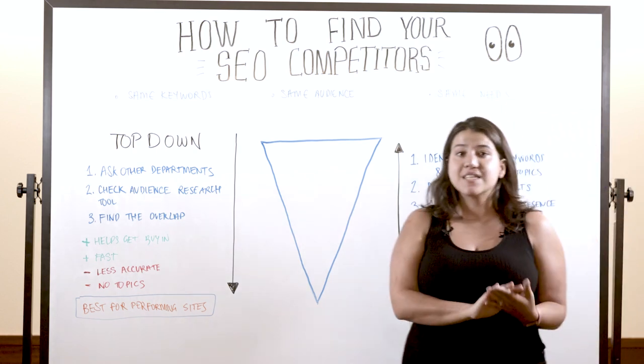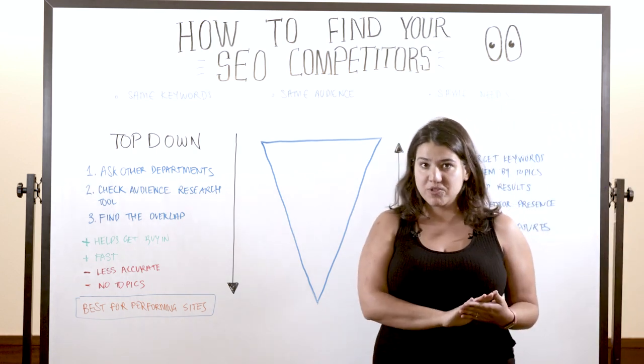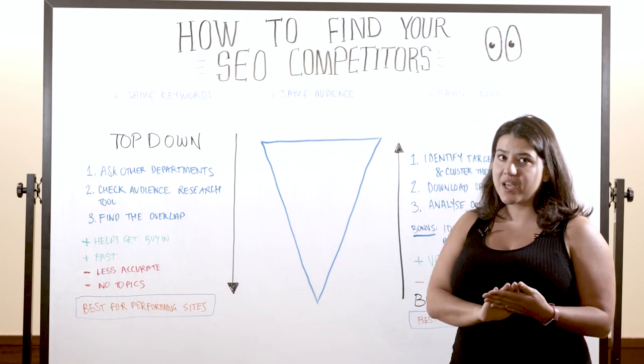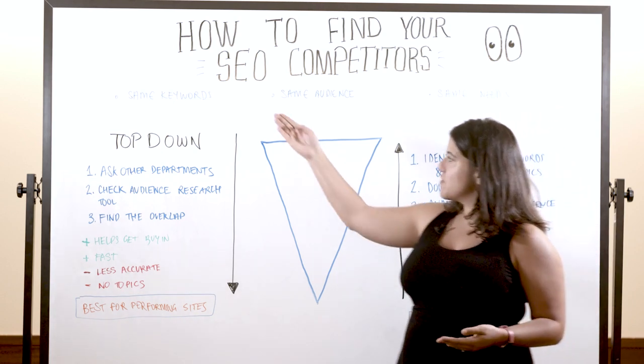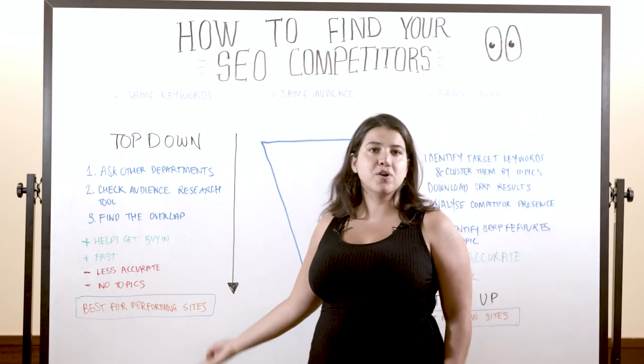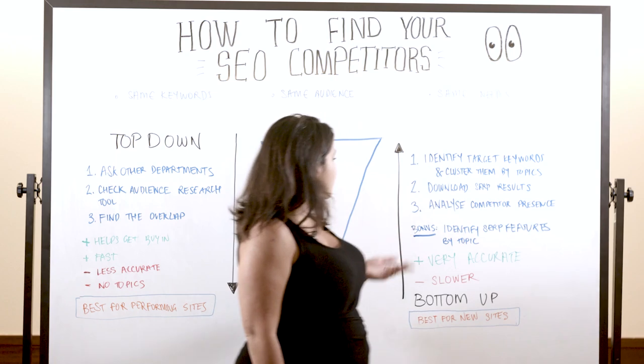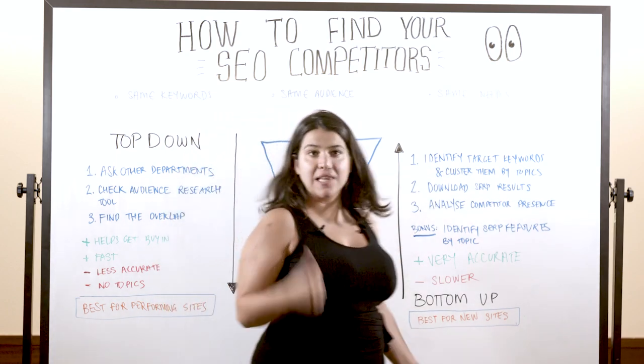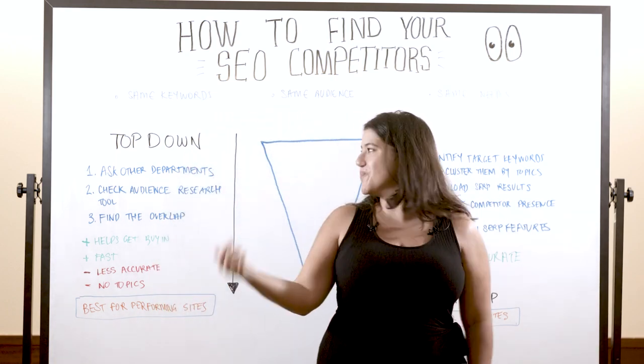There are essentially two approaches to identifying your competitors. You've got a top-down approach and you've got a bottom-up approach. So let's begin with the top-down one.